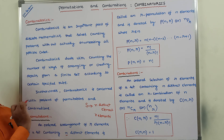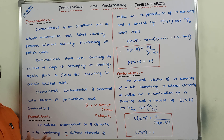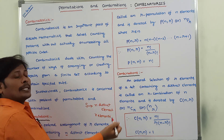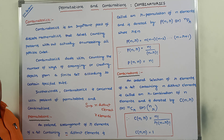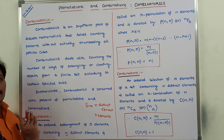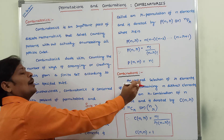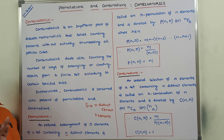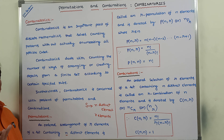This is the description of what combinatorics is, what type of problems it solves, and what permutations and combinations are along with their formulas. For arrangement purpose we use permutations, and for choosing or selection purpose we use combinations. In both cases, we count the number of ways of arrangement or selection of R objects from a given set of N distinct elements.